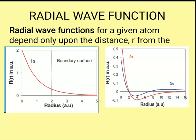Radial wave function graphs can be plotted for 1s, 2s, 2p, and all the various orbitals. In case of 1s, if we draw the graph for radial wave function versus distance R, we get a curve. This curve shows that when the distance is less, the radial wave function is maximum. But as the distance increases, the radial wave function for the 1s electron decreases.